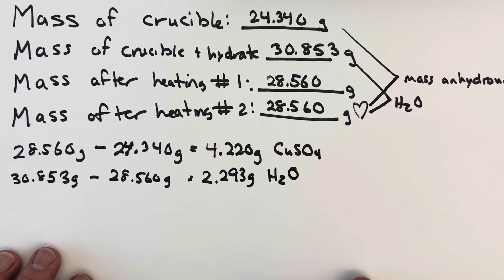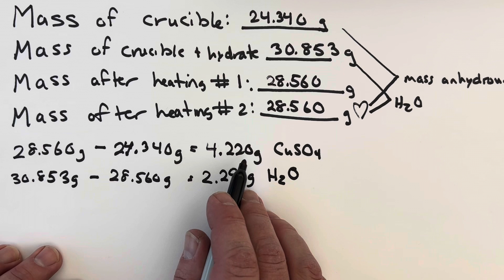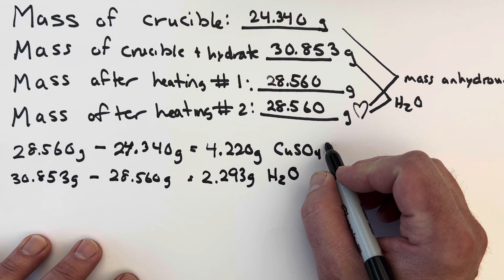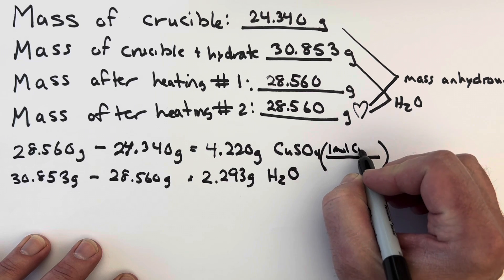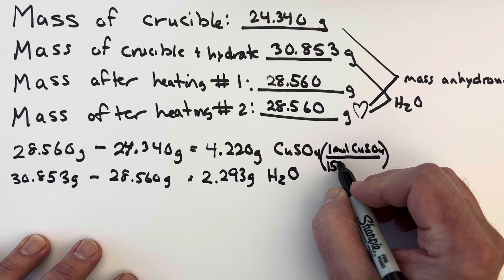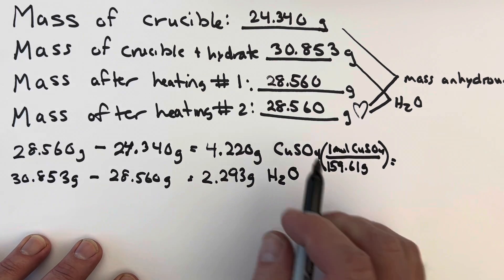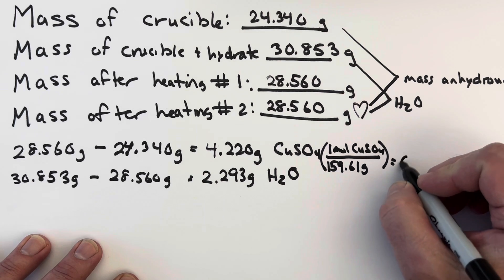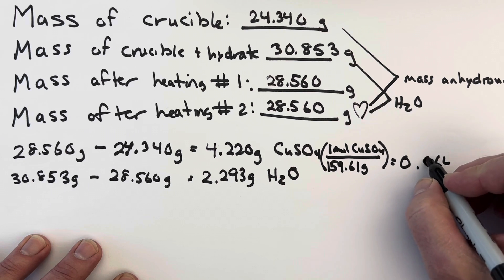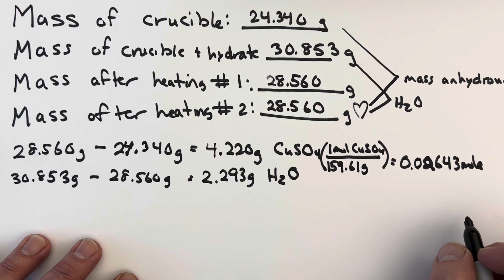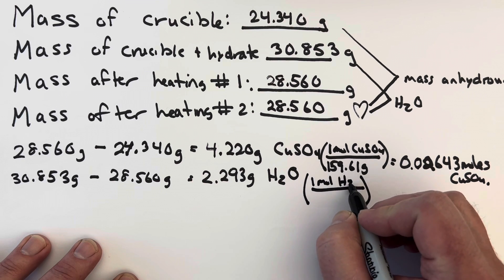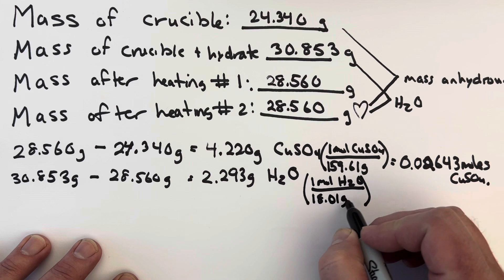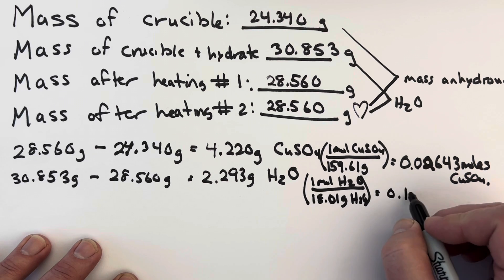All right, so the next step to determining the chemical formula of our hydrate is to convert both of these into moles. I'm going to go ahead and do it right in place here. To convert them both to moles, we are going to divide them both by their molar masses. According to the periodic table, one mole of copper sulfate has a molar mass of 159.61 grams. If I do this divided by that, I will end up with 0.02643 moles of copper sulfate. Doing the same for water, I'm going to divide the mass of water by the molar mass of water, which is 18.01 grams, and in that case I get 0.1273 moles of water.